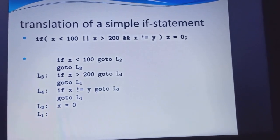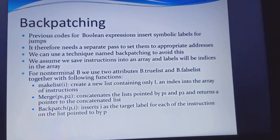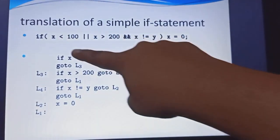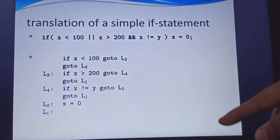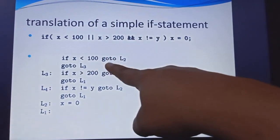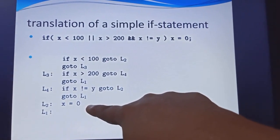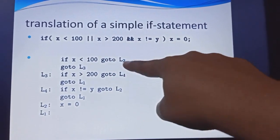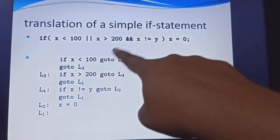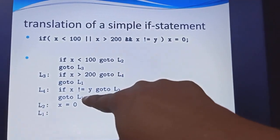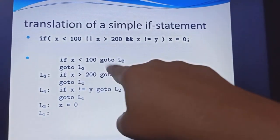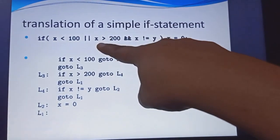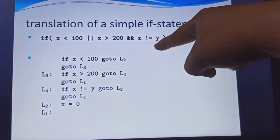Next is the translation of simple if statements. In this example, if the condition is true it returns this value. If the condition is false — for example, if x less than 100 then go to L2, and the remaining value of x should be 0. Or else if x is greater than 200, a second condition goes to L4. At L4, if x and y values are not equal, then go to L1. If the condition is true it returns this value; if it fails it goes on to the next label.